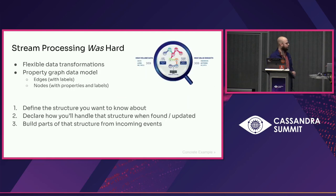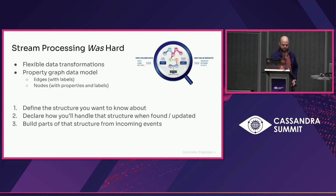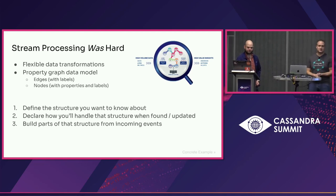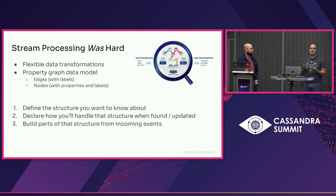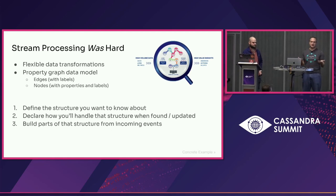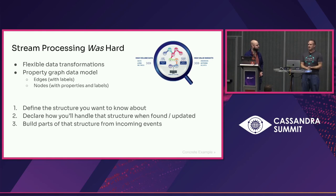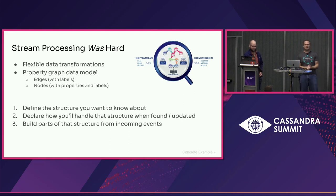As a graph tool, Quine isn't a lot different from other graph databases or graph tools you might already be used to — things like JanusGraph and Neo4j, they're all property-based graph models. And they both allow you to use Cypher, which is kind of becoming a standard in the graph world, which Quine does as well. And we'll show you a little bit of Cypher coming up.